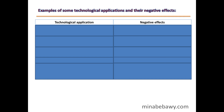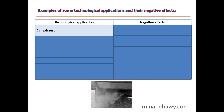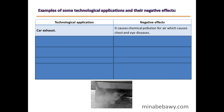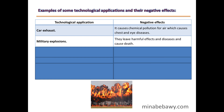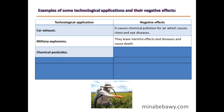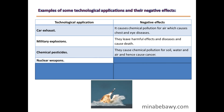Examples of technological applications with negative effects: Car exhaust causes chemical pollution of air, leading to chest and eye diseases. Military explosions leave harmful effects, diseases, and cause death. Chemical pesticides cause chemical pollution of soil, water, and air, and can cause cancer. Nuclear weapons cause massive destruction.